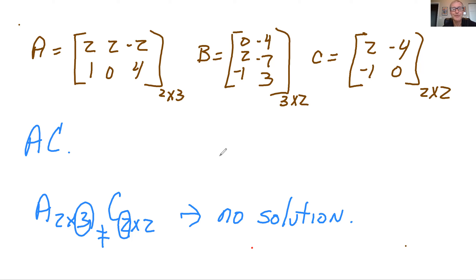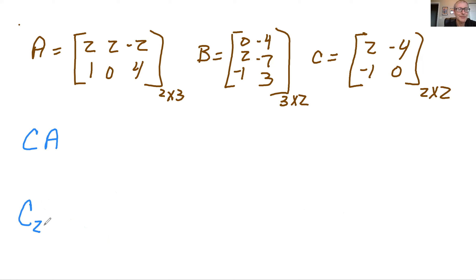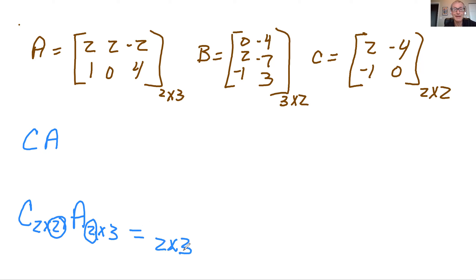But what if we flip it? Instead of A times C, how about C times A? C times A is 2×2, and A is 2×3. You can see you have a 2 in the column of the first matrix and a 2 in the row of the second, so this answer will be a 2×3. This one you can actually do. Let's do this one and see how it turns out.